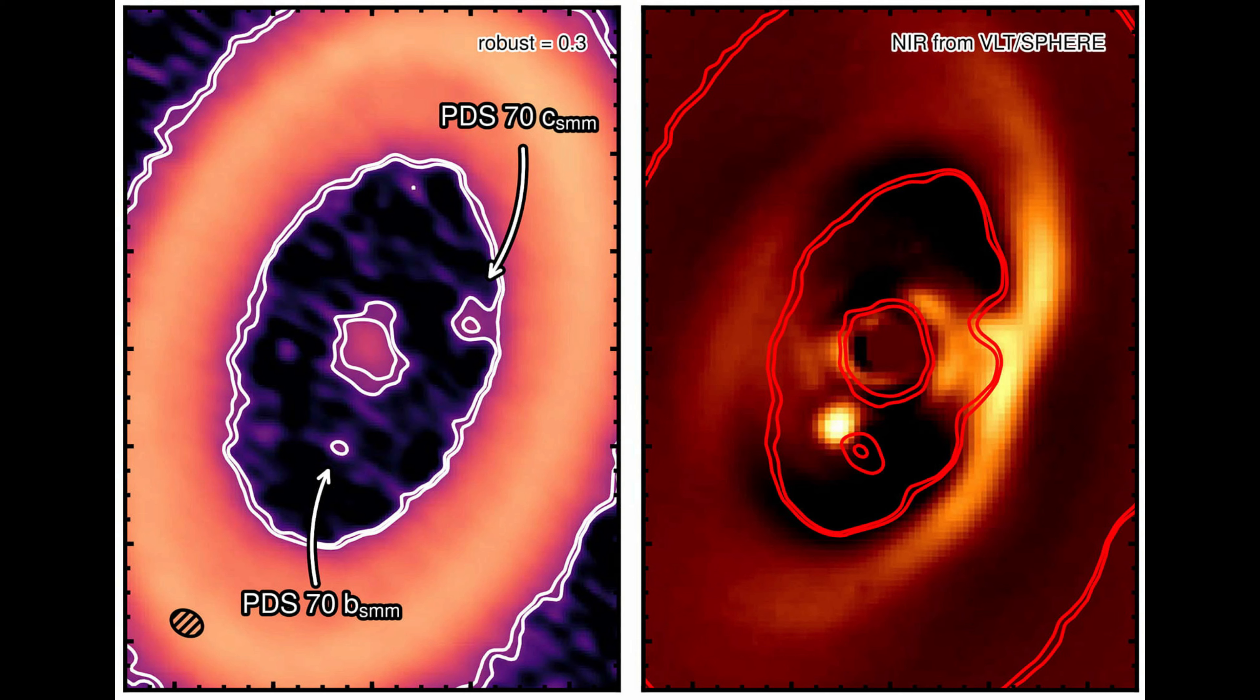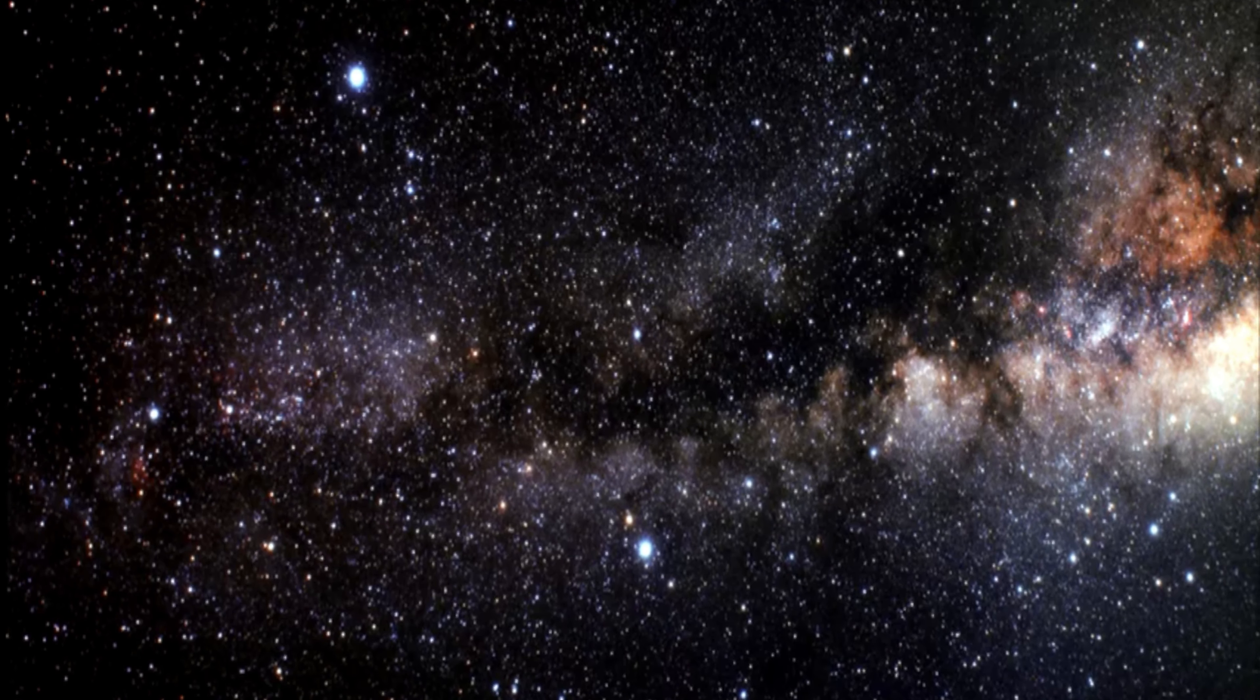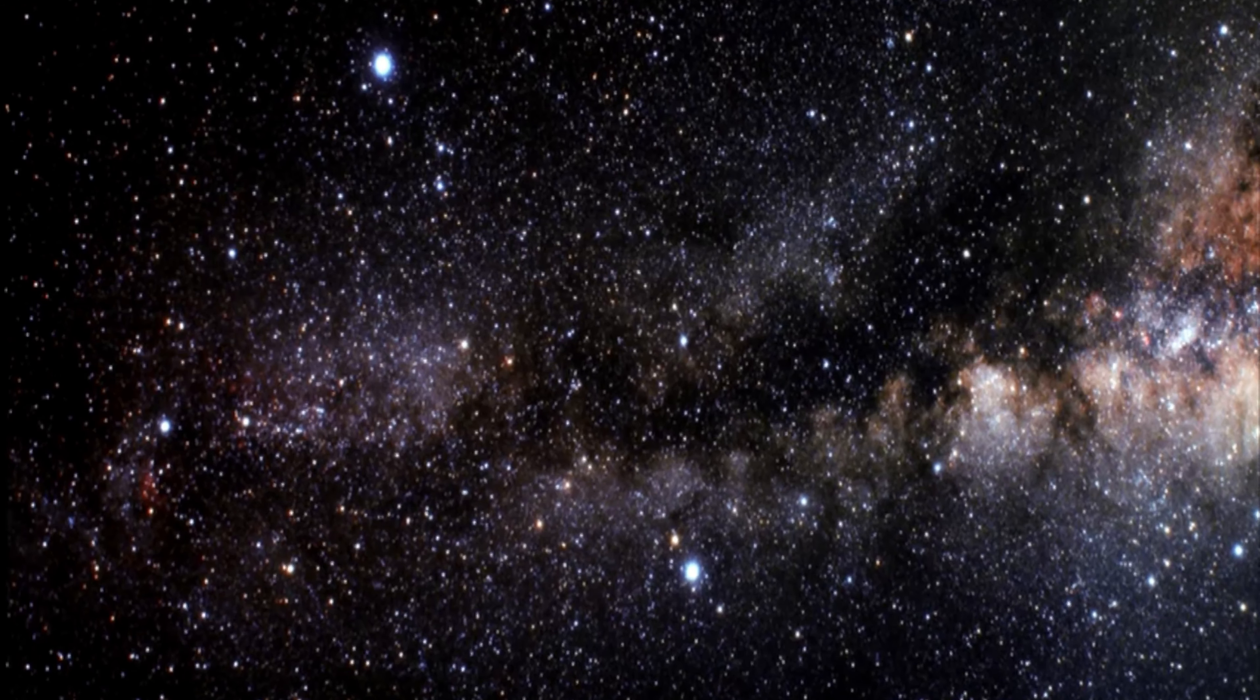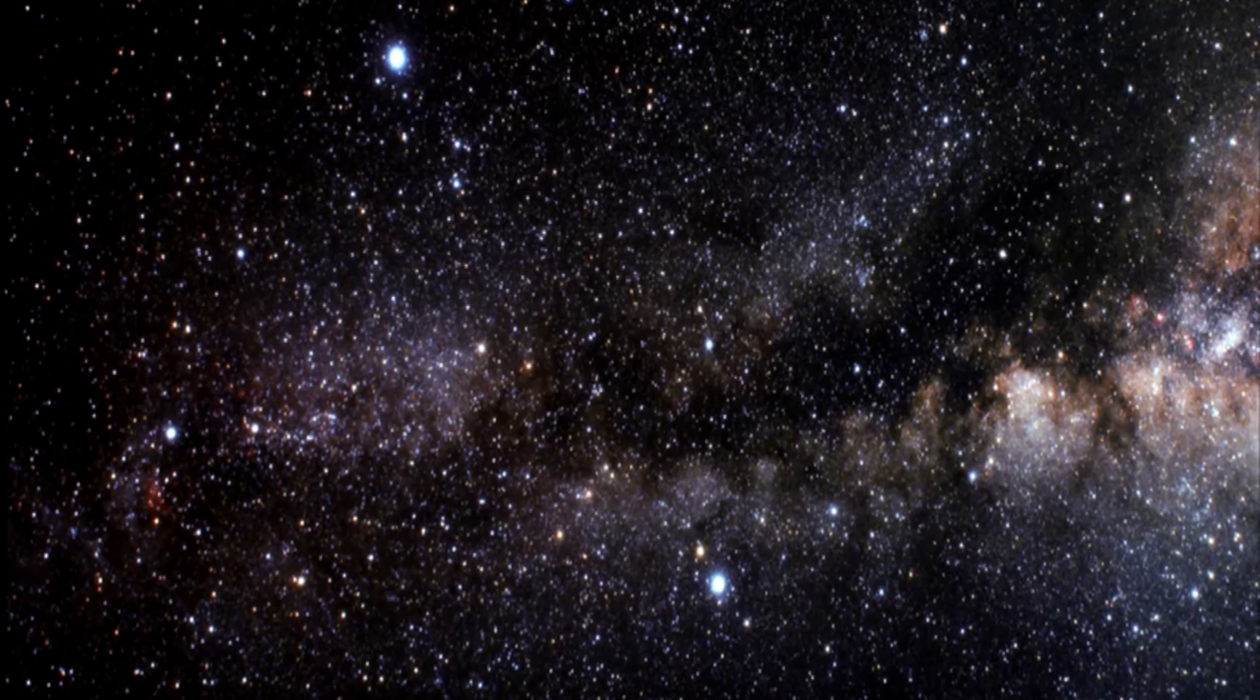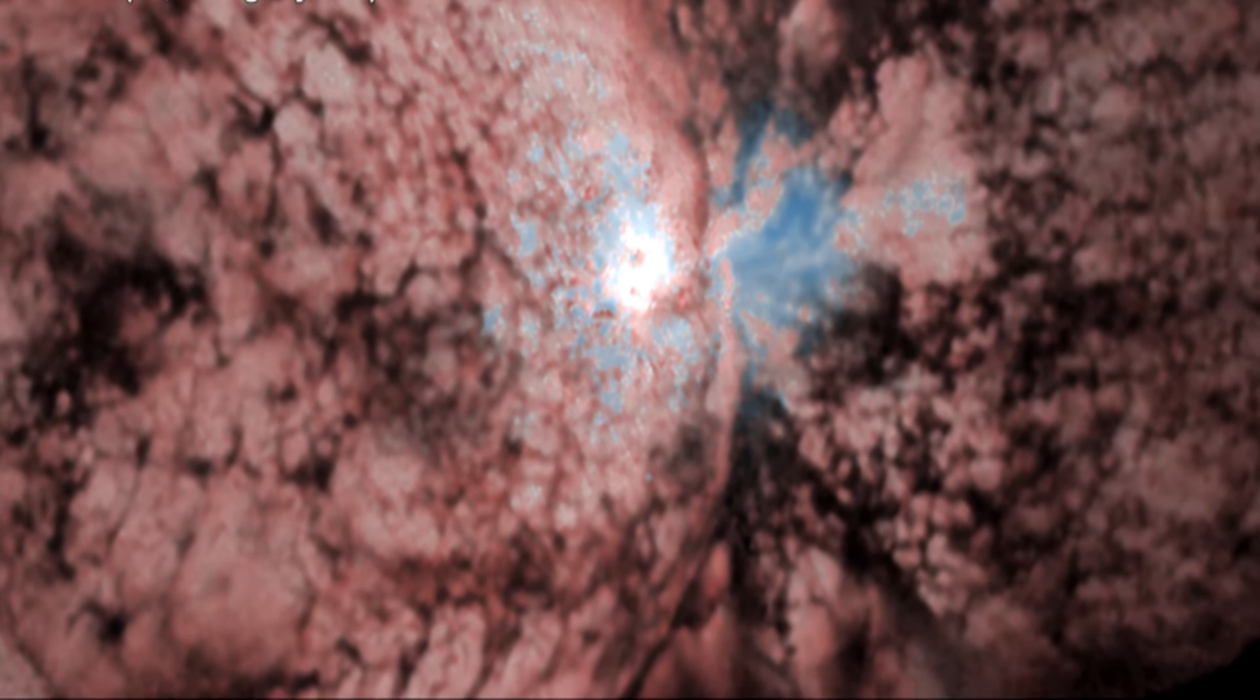These observations offer insights into how gas giant planets formed around our Sun 4.6 billion years ago. Jupiter may have bulked up on a surrounding disk of infalling material. Its major moons would have also formed from leftovers in that disk.